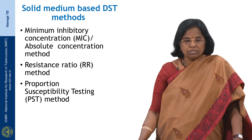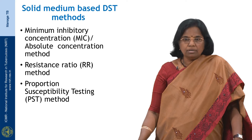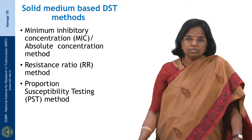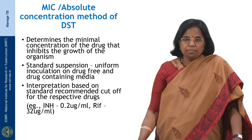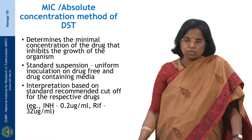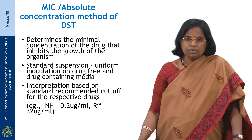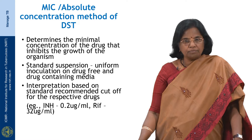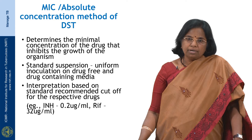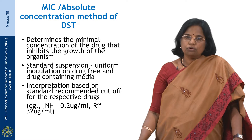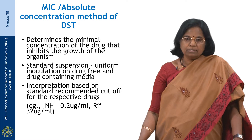The solid medium-based DST methods include the minimum inhibitory concentration method, in short known as the MIC method, the resistance ratio method, or the proportion susceptibility testing method, in short known as the PST method. The MIC method determines the minimal concentration of the drug that inhibits the growth of the organism. A standard suspension is taken and a uniform volume is inoculated onto drug-free and drug-containing media. The slopes are incubated at 37 degrees for about 28 days, and growth between the drug medium and drug-free medium is compared. Interpretation is based on the standard recommended cutoff values — for example, for isoniazid it is 0.2 µg/ml and for rifampicin it is 32 µg/ml.